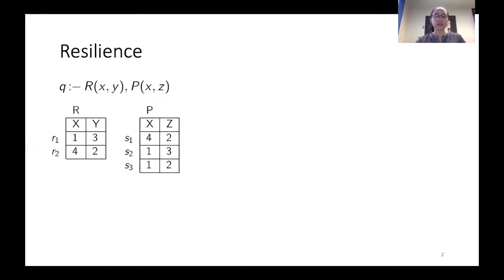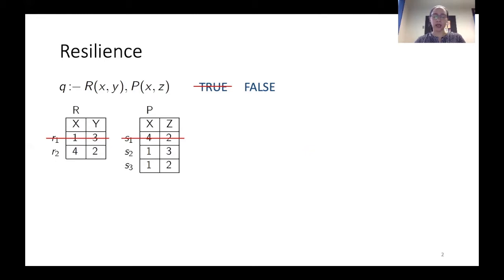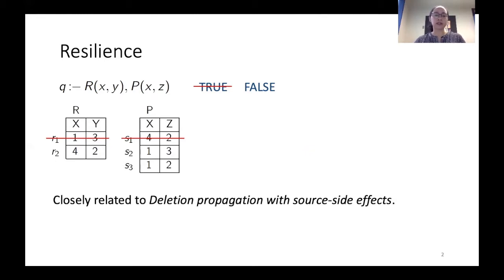In order to define resilience, I'm going to give you an example. Here we have a boolean query Q that evaluates to true. In this problem we are looking to identify how resilient a query is to changes in the database. For this particular database, I need to delete two tuples in order to change the query answer. The more tuples you need to delete, the more resilient the query is, and we are interested in finding the minimum set of tuples that changes the query answer. This problem is closely related to deletion propagation with source side effects, and any complexity result for resilience also holds for this version of deletion propagation.